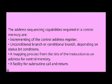The address sequencing capabilities required in a control memory are: incrementing of the control address register, unconditional branch or conditional branch depending on status bit conditions, a mapping process from the bits of the instruction to an address for control memory, and a facility for subroutine call and return.